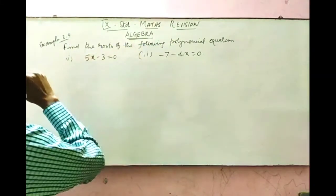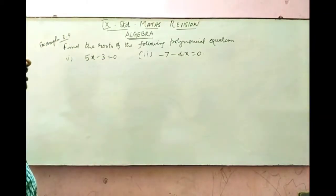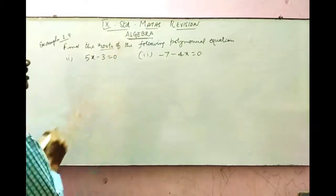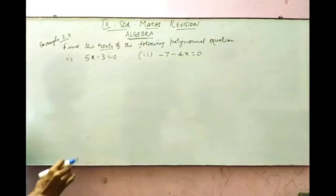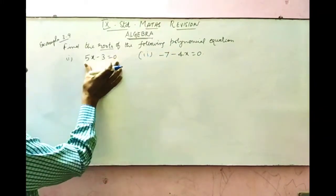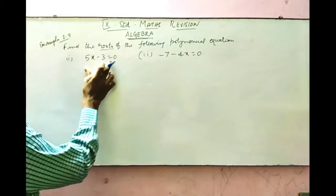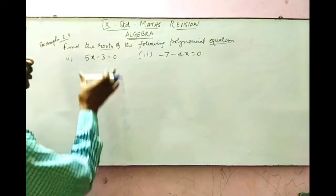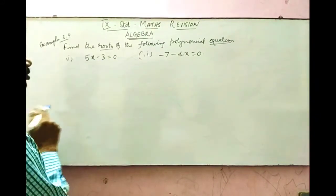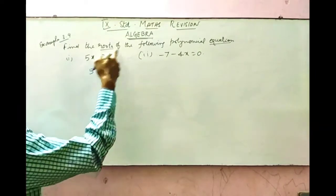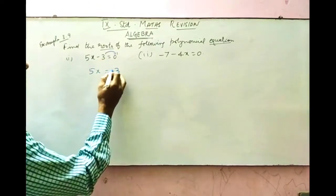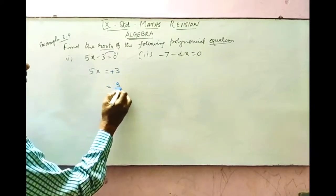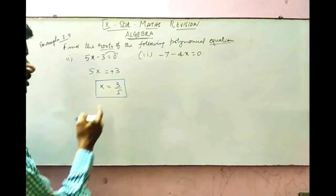Next, we are going to find the root of the following polynomial equation — example 3.9. The first equation is 5x minus 3 equals 0. To find the root, take minus 3 to the other side — it becomes plus 3. Then 5x means 5 times x, so divide both sides by 5. You get x equals 3 by 5. This is the root of the given equation.